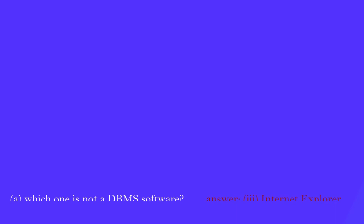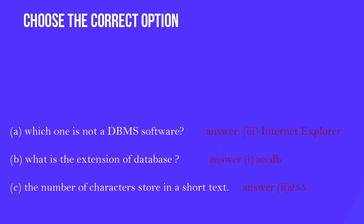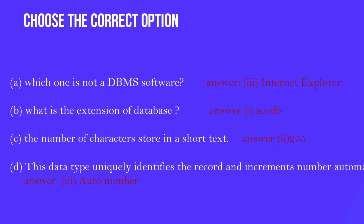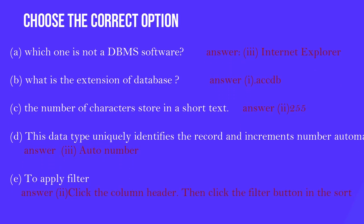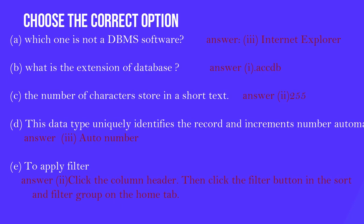Third one: Choose the correct option. A: Which one is not a DBMS software? Internet Explorer, third option. B: What is the extension of database? .accdb means access database, first option.